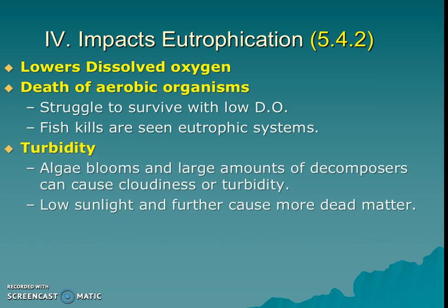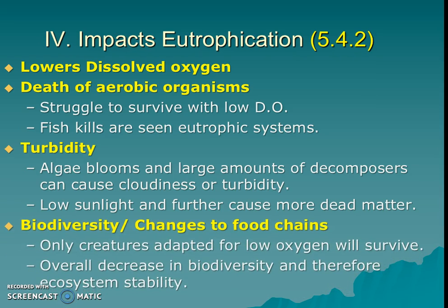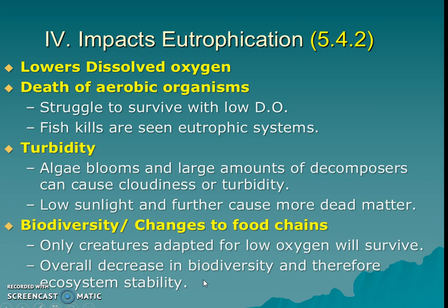That is a big sign that the area is doing very poorly. We also see turbidity increase — algae blooms cause decomposers to make cloudy water, and that low sunlight causes even more dead matter and even more eutrophication. Overall, biodiversity goes down, changes to the food chain occur, and ecosystem stability drops.